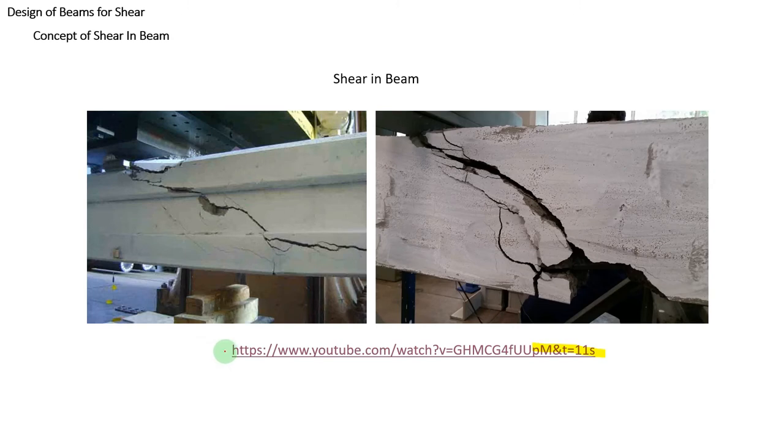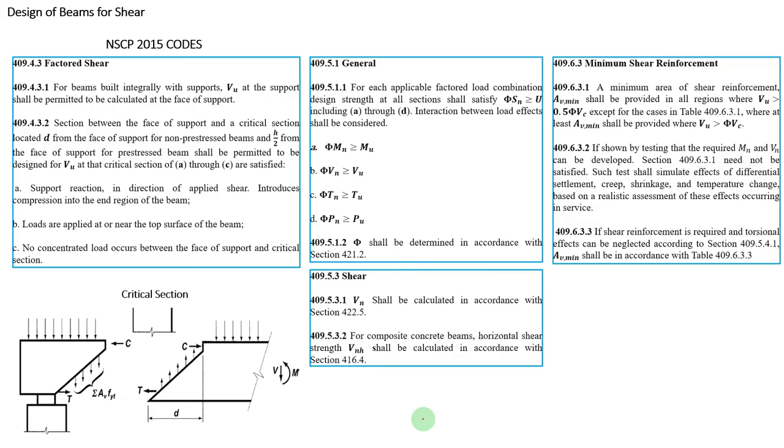You can see in that video, the sample beam he tested cracked like that because it had no stirrups placed here. This is the code we'll use for designing our beam under shear.